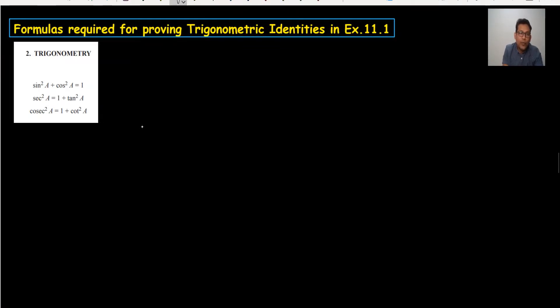First of all, you have to do one thing. From the first identity, sin²θ + cos²θ = 1, you have to make sin²a as the subject.